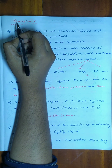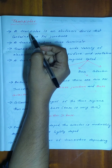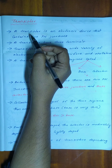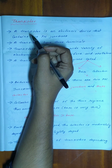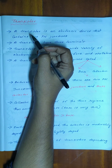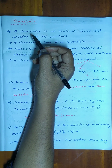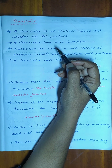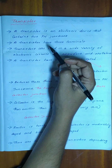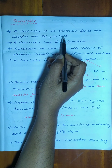We are going to discuss the next topic: the transistor. A transistor is an electronic device that contains two PN junctions. There are three terminals: emitter, base, and collector.